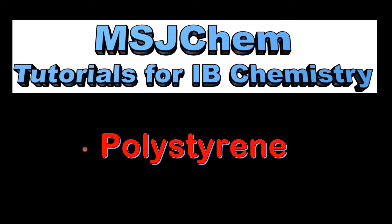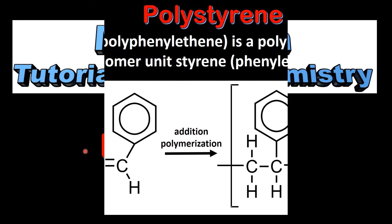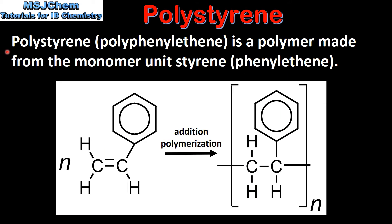This is MSJChem. In this video I'll be looking at polystyrene. Polystyrene, or polyphenylethene, is a polymer made from the monomer unit styrene, or phenylethene. Here on the left you can see the monomer unit styrene or phenylethene, and on the right we have the repeating unit for the polymer polystyrene or polyphenylethene.